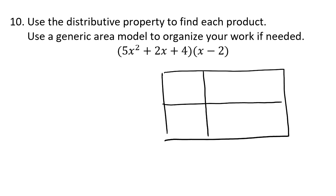So I've got a trinomial. There's three parts times a binomial, two parts. So I'm going to look at this as 5x² plus 2x plus 4. And then down on the other side, I'm going to write the x and the negative 2.